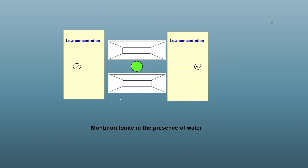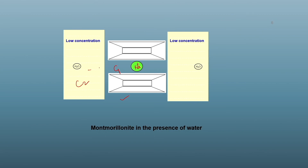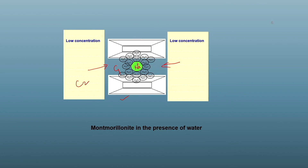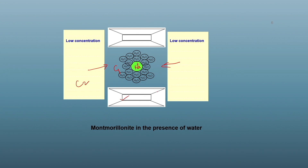Taking an example of a montmorillonite mineral with exchangeable cations — sodium, potassium, or magnesium — in a dry state with a little water, and pure water outside. The concentration C1 inside is significantly higher compared to C2 outside. Because of this concentration gradient, there will be a flow of water into the system. Water molecules will enter the system and plate separation will increase until there is an equilibrium between C1 and C2, resulting in swelling of the soil.